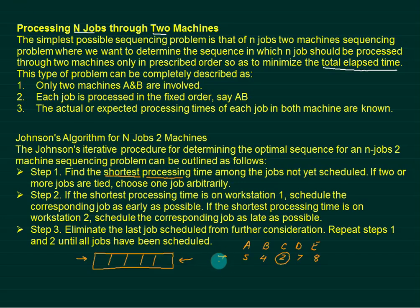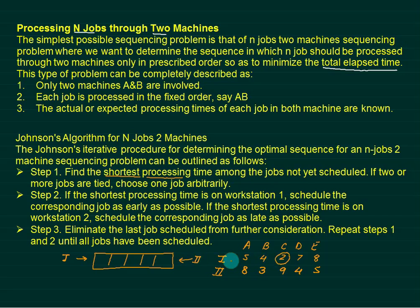Let's say we have machine one data and machine two data, and the job order is eight, three, nine, four, and five. The smallest time is two. This side is for machine one and this side is for machine two. The minimum time belongs to machine one, so you assign job C first here. Cancel this entry. Now check the lowest remaining time, which is three — that belongs to machine two, so you assign job B from the late side.